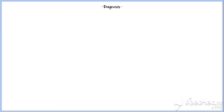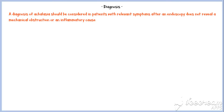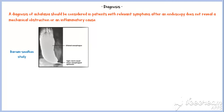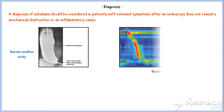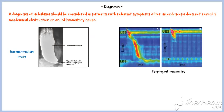Now let's discuss the diagnosis of achalasia. A diagnosis of achalasia should be considered in patients with relevant symptoms after an endoscopy does not reveal a mechanical obstruction or an inflammatory cause. Barium follow-through and esophageal manometry are the commonly used tests to diagnose achalasia. Laboratory tests are not useful in diagnosing achalasia.